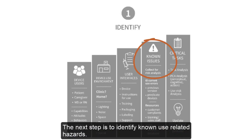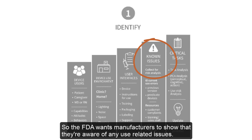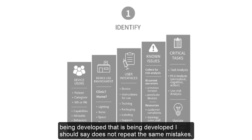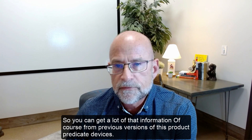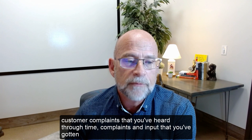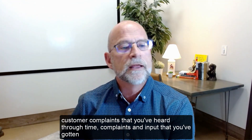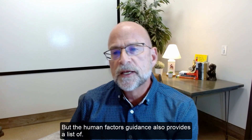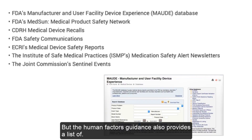The next step is to identify known use-related hazards. The FDA wants manufacturers to show they're aware of any use-related issues present in similar or predicate devices, and that the device being developed does not repeat the same mistakes. You can get this information from previous versions of the product, predicate devices, customer complaints, and input gathered through training, sales staff, and similar sources.